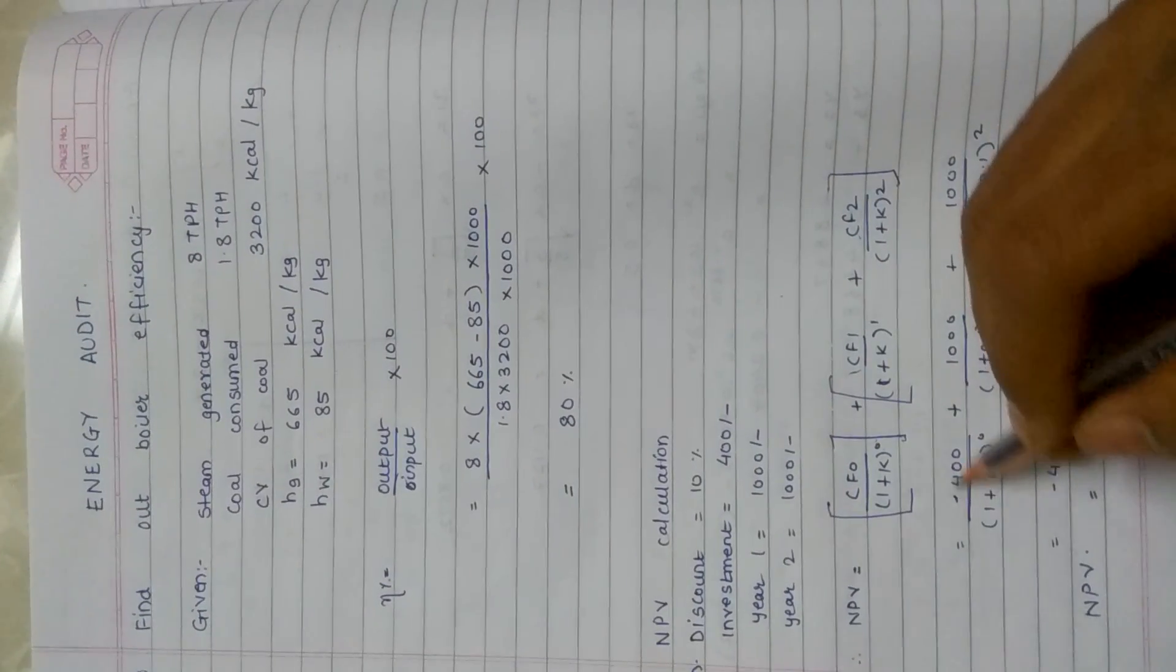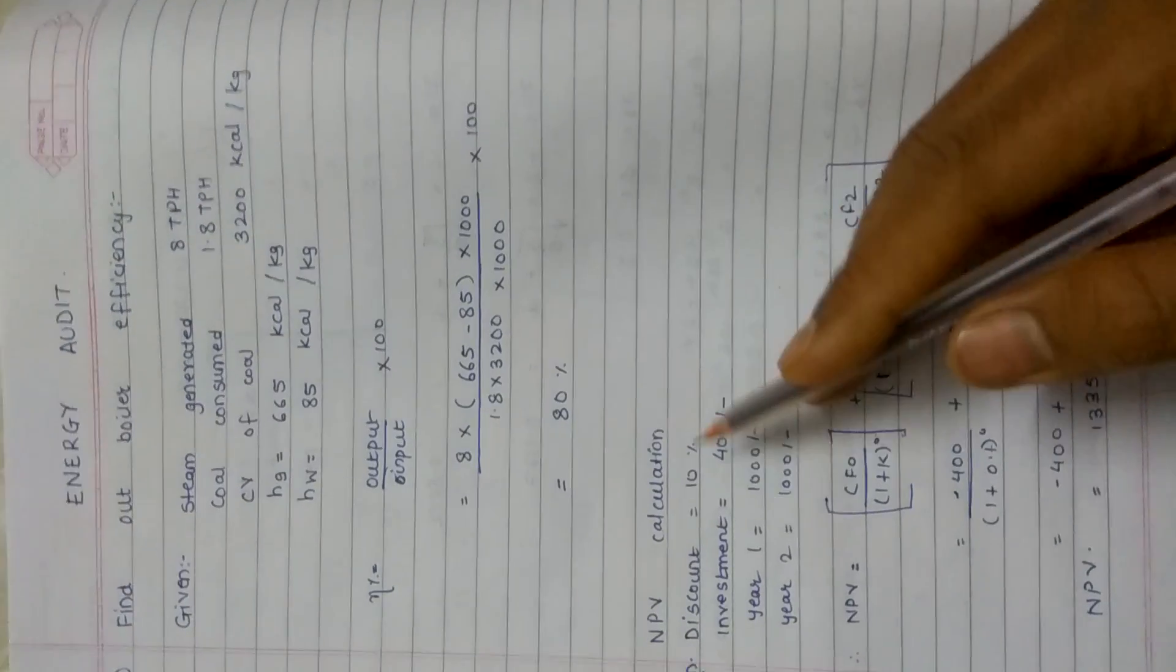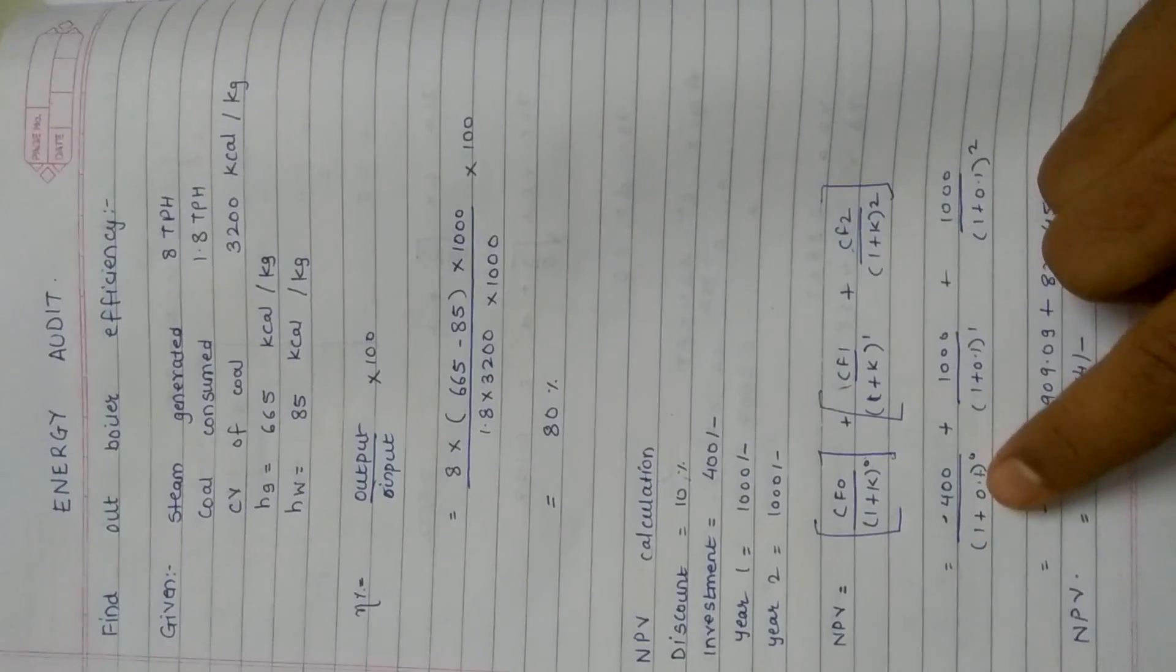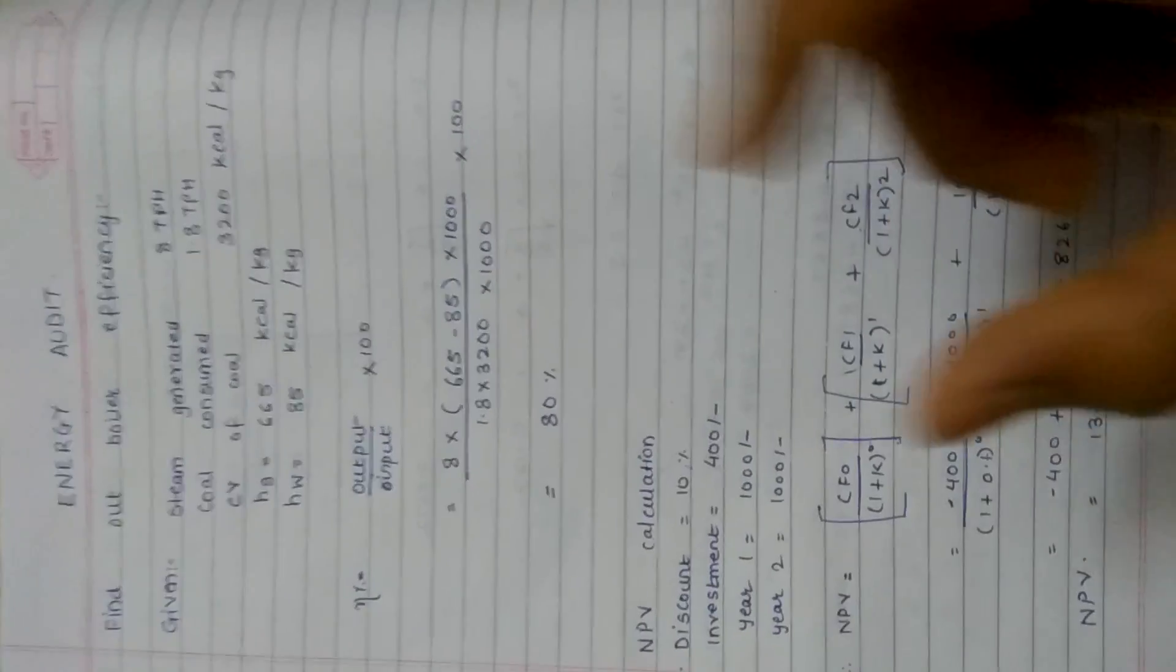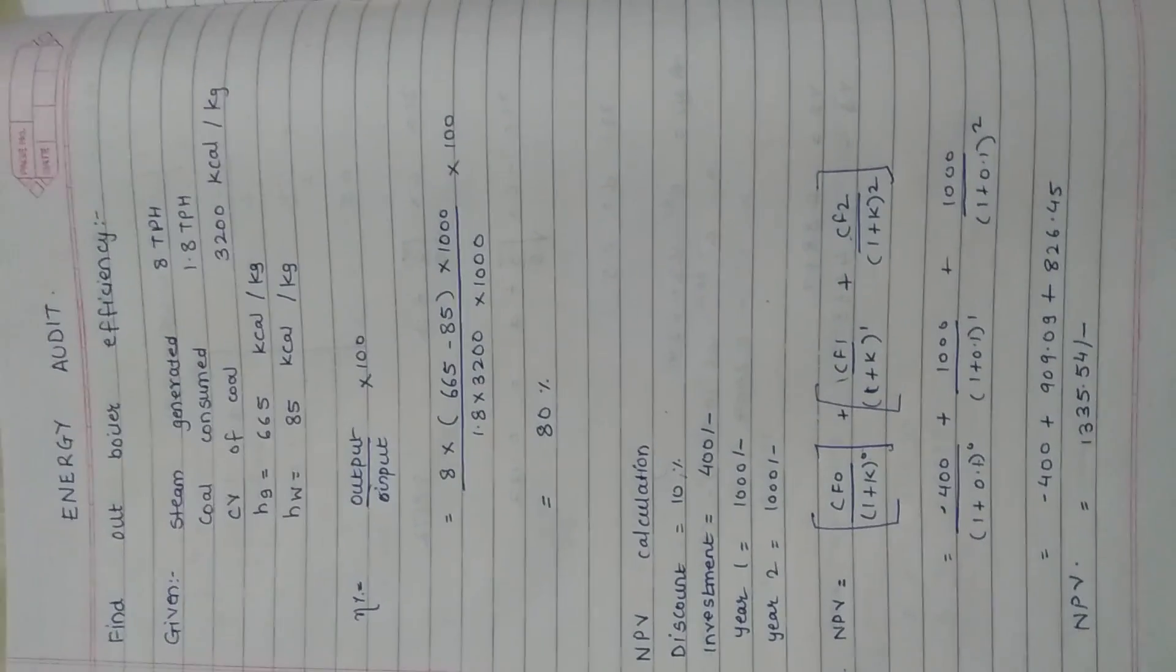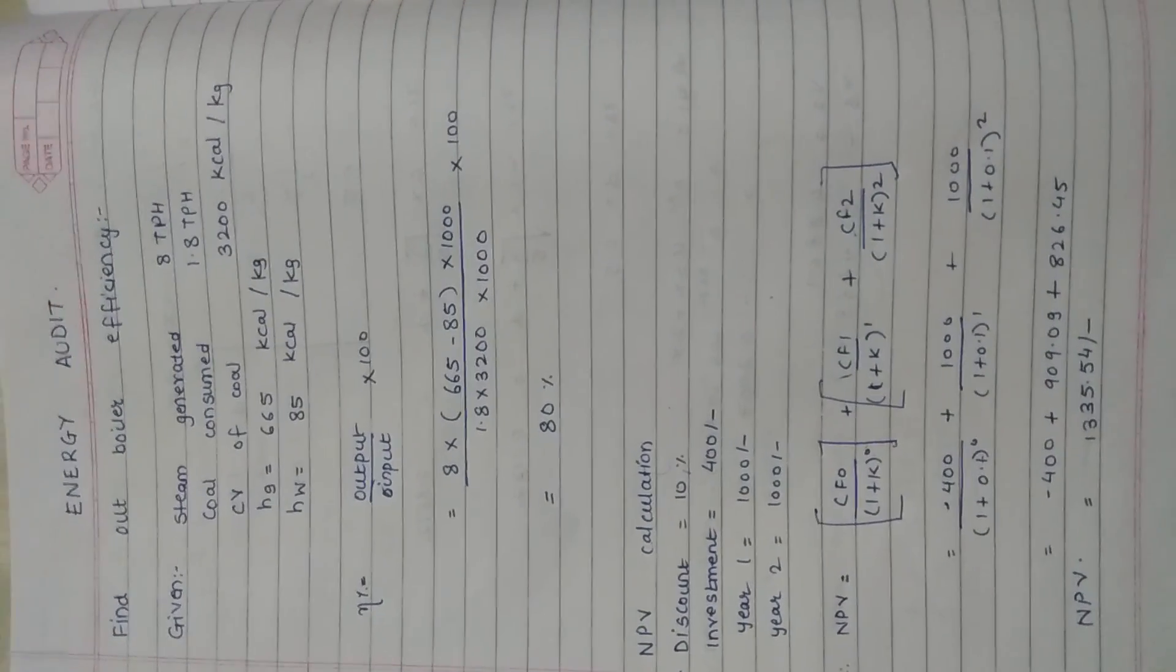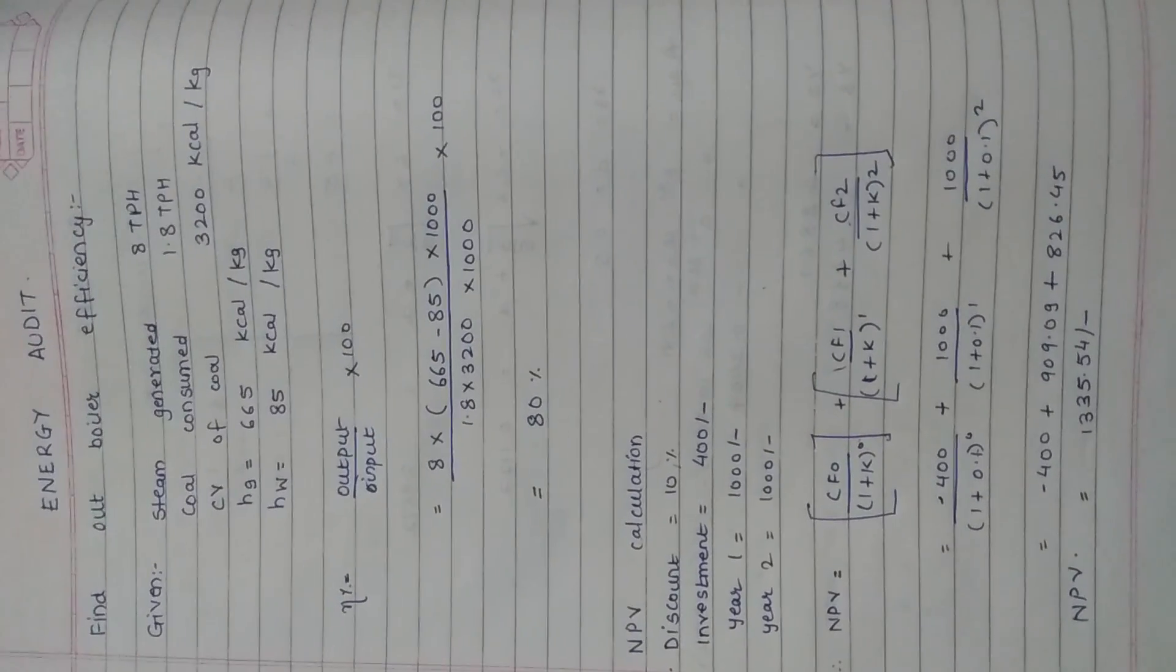The first term is minus 400 divided by 1 plus 0.1 (because 10 percent we cannot take directly, we have to divide it by 100), raise to 0. That is the initial investment at the time of installation. Next was 1000 upon (1 plus 0.1) raise to 1 plus 1000 upon (1 plus 0.1) squared. So 1 was the first year, 2 was second year.